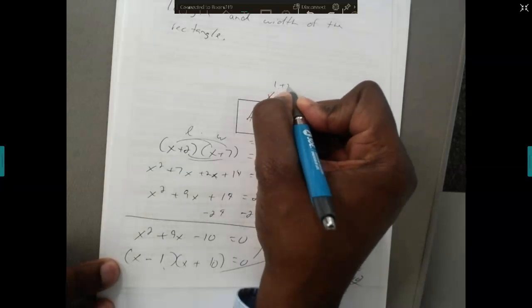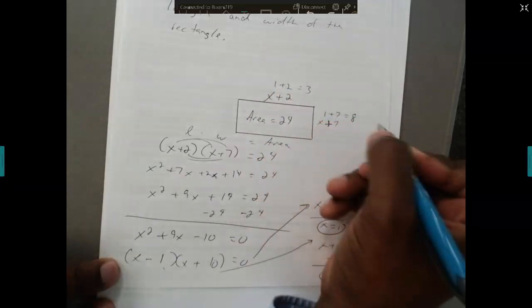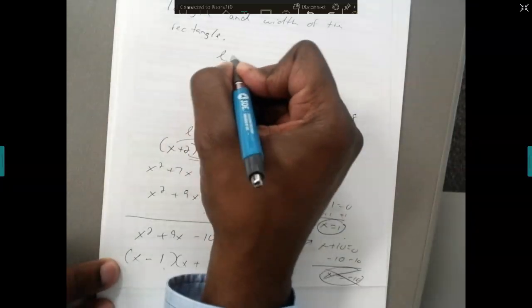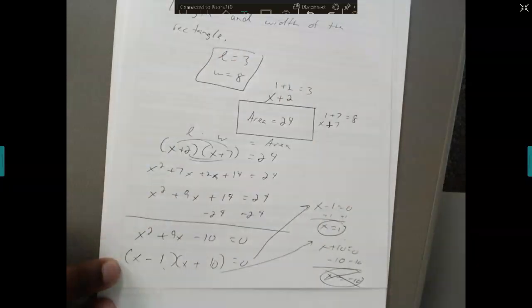That means this side is going to be 1 plus 2 which is 3. This side is going to be 1 plus 7 which is 8. So the length could be 3 and the width could be 8 of that rectangle.